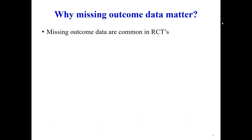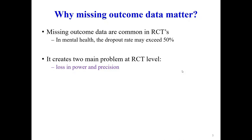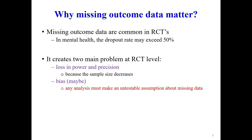Missing data is a problem because even in very well randomized clinical trials, you expect to have missing data. In mental health, the dropout rate may exceed 50%. This creates two problems at the RCT level: we lose power and precision because our sample size decreases below what was planned, and it may cause bias if the missing data differ from the observed ones.